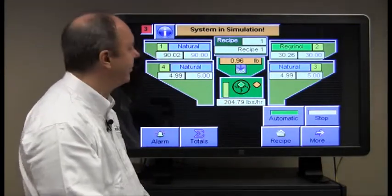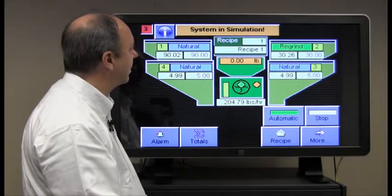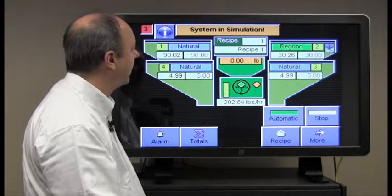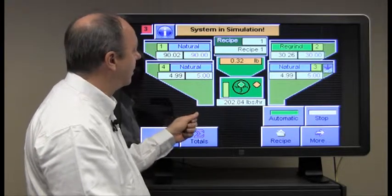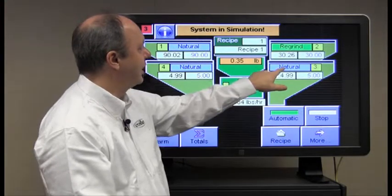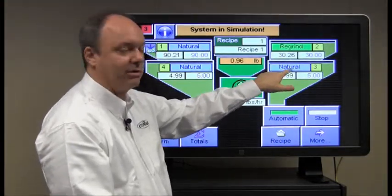Again, the one pound batch is made. Okay. So let's return to the recipe and say we want to change one of these components to something other than natural.